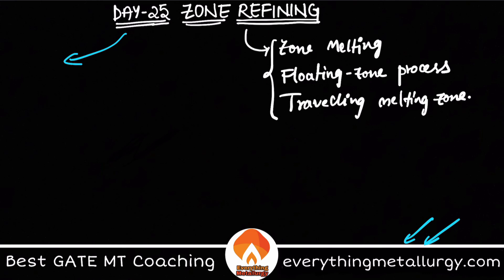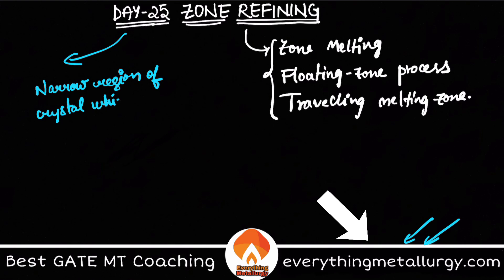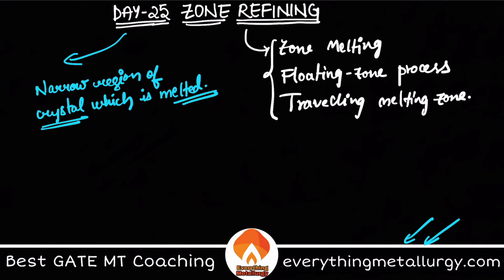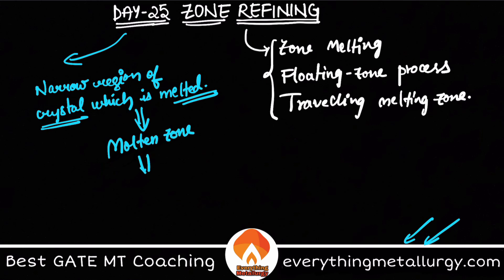This process involves a narrow region of crystal which is melted. I'm using the word crystal because zone refining is typically used in single crystal processing — best examples are transistors and semiconductors. All sophisticated applications can benefit from zone refining. There will be a narrow region of crystal that is melted, and this molten zone is allowed to travel throughout the sample.